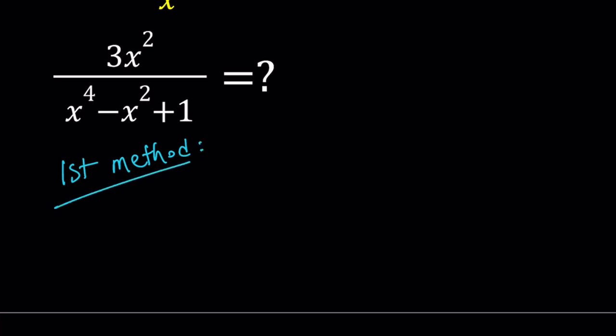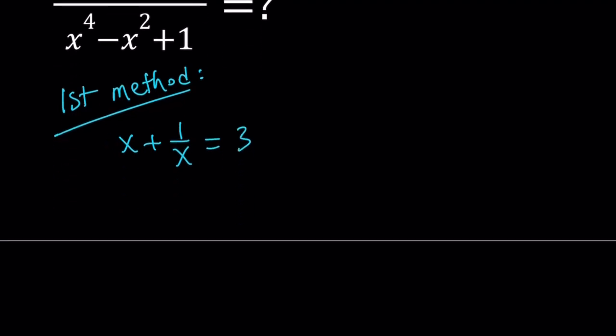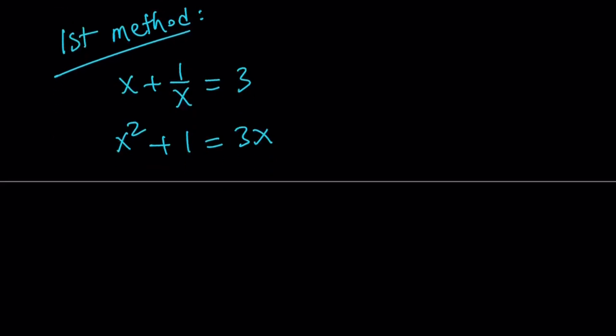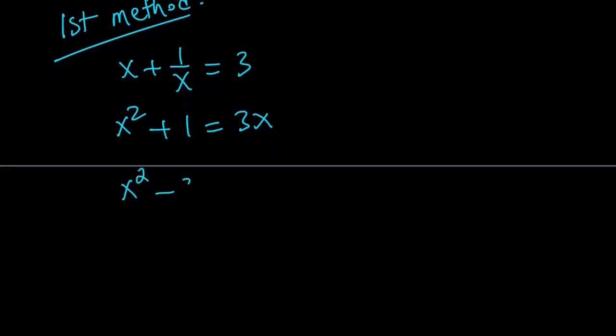For my first method, I'm going to use a direct approach and find what x is. Let's notice that x does not equal 0, so I can multiply both sides by x. That's going to give me the following, and then we can put everything on the same side and solve this quadratic.